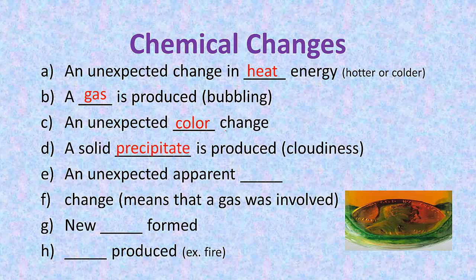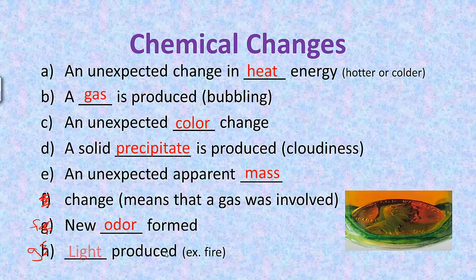A solid is produced, or a precipitate, if it gets cloudy. An unexpected apparent mass change means that a gas was involved. A new odor is formed, like spoiling garbage. Or a light is produced, for example fire or a glow stick. Note: the indicators on the notes should reference both 'f' and 'g' — sorry about that.